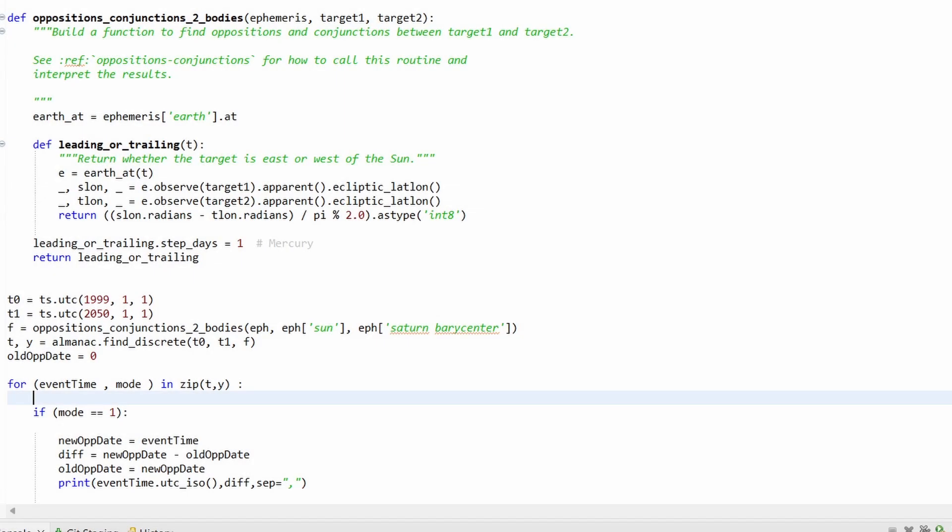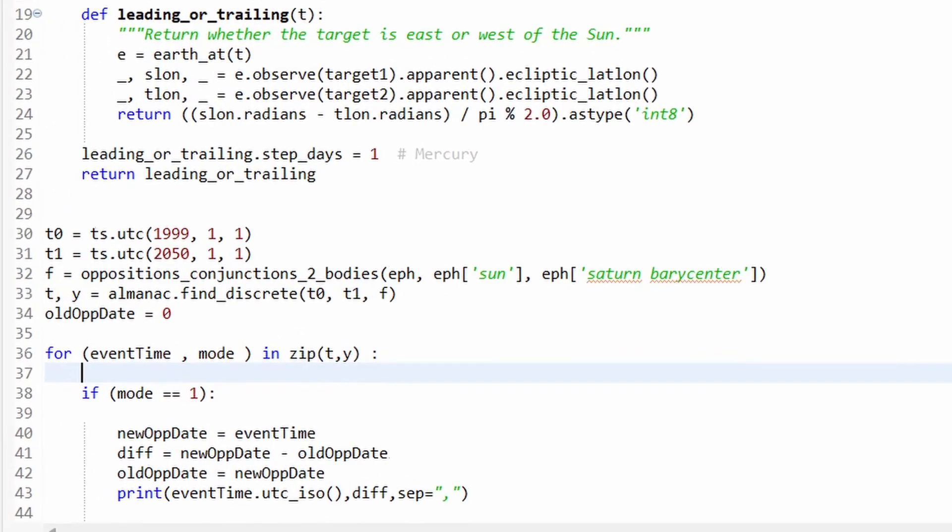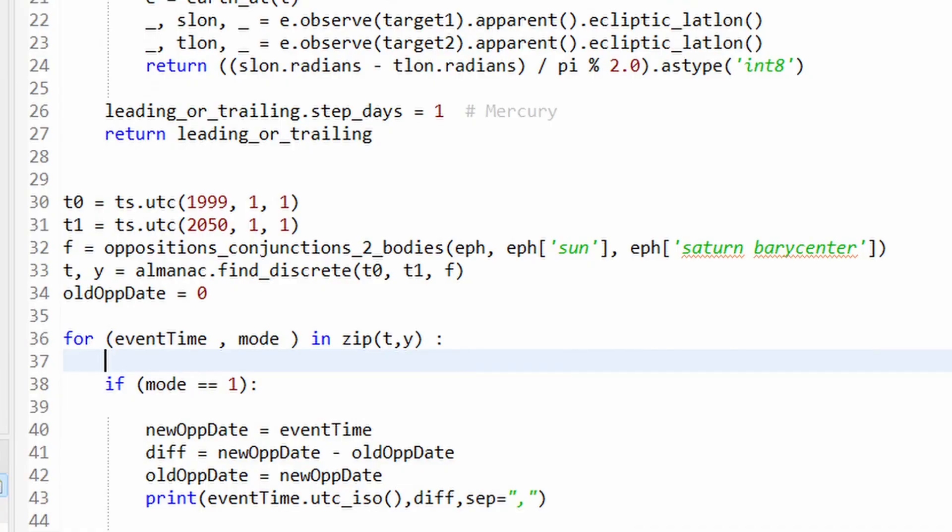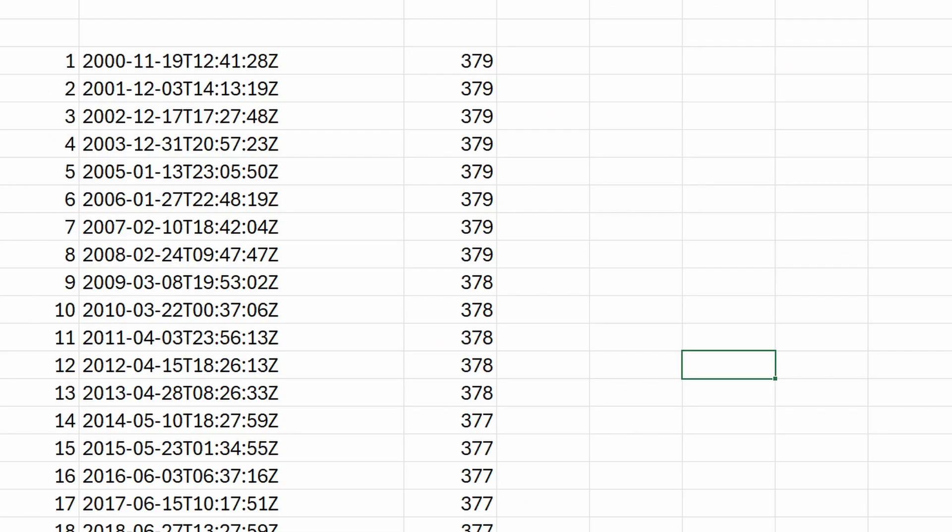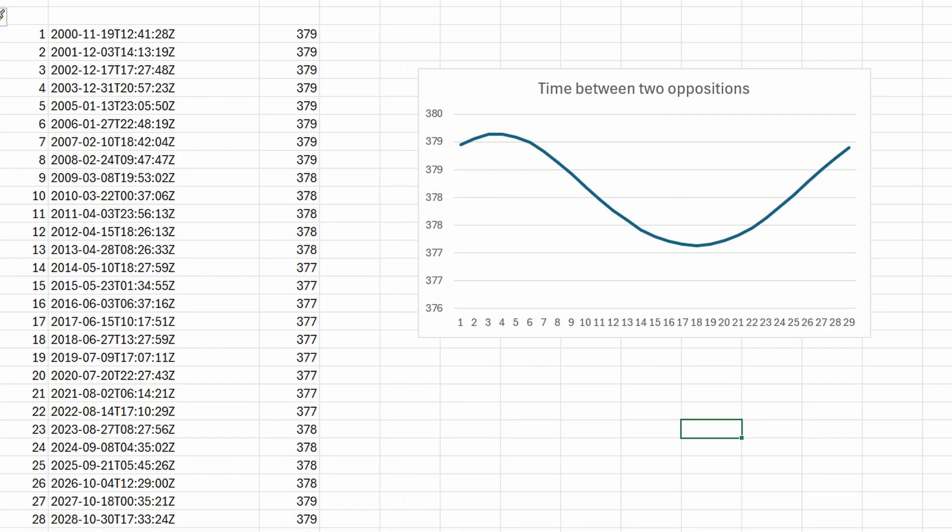During this activity, I used Python-based Skyfield library to generate a lot of data. Here is the data generated for opposition of Saturn. On an average, duration between two oppositions for Saturn is 378 days.